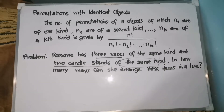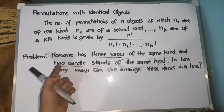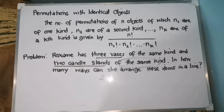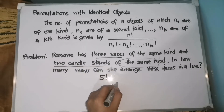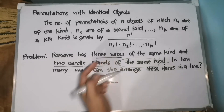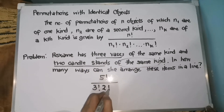Let us solve this problem. We have n factorial — so we have how many items? 3 plus 2, so we have here 5 factorial. We have 5 factorial over the first object that we have, so that is n sub 1, which is 3 bases — therefore we can write it as 3 factorial. And then the next kind, or n sub 2, is 2 candle stands, so that is 2 factorial.